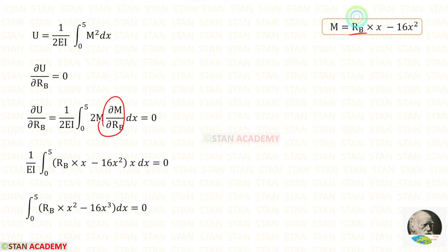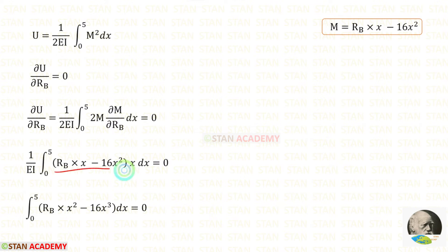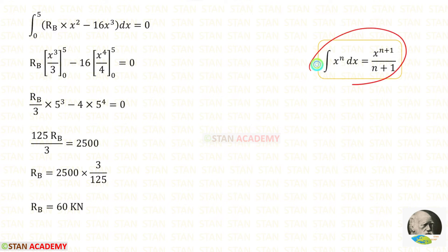When we partially differentiate M with respect to RB, for the RB term it will be 1, and for the term with no RB it will be 0. So 1 into X gives X. Taking 1 upon EI to the other side, 0 into EI gives 0. Multiplying these terms: X into X gives X squared, and X into X squared gives X cubed.